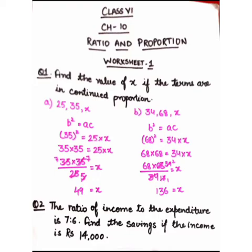Let's start with the second question: 34, 68, x. Here also we will use b squared = ac. Here a = 34, b = 68, and c = x. So, 68 squared = 34 × x, meaning 68 × 68 divided by 34 is equal to x.